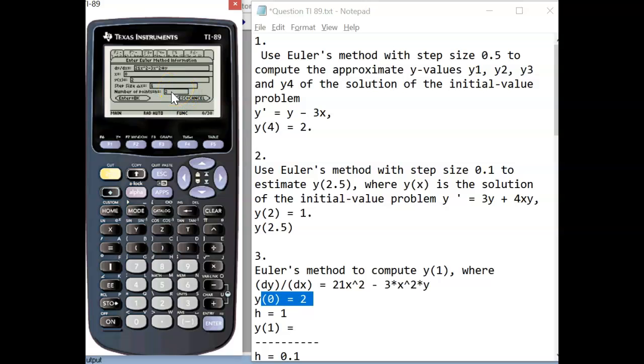How many points do we need in order to go from 0 to 1 with a step size of 1? Well, that's only going to be 1 point. So instead of 2, we're going to put in 1, and we press enter.